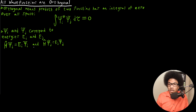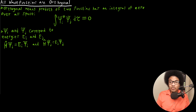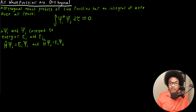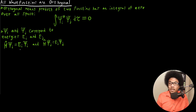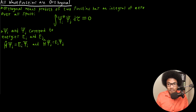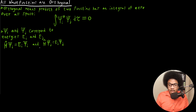We have two different wave functions, ψ_i and ψ_j. They each correspond to two different energy eigenvalues, E_i and E_j. I wrote out both of their Schrödinger equations here — same Hamiltonian describing the same system, but you can get two different energies by having two different wave function solutions. ψ_i yields energy E_i and ψ_j yields energy E_j.